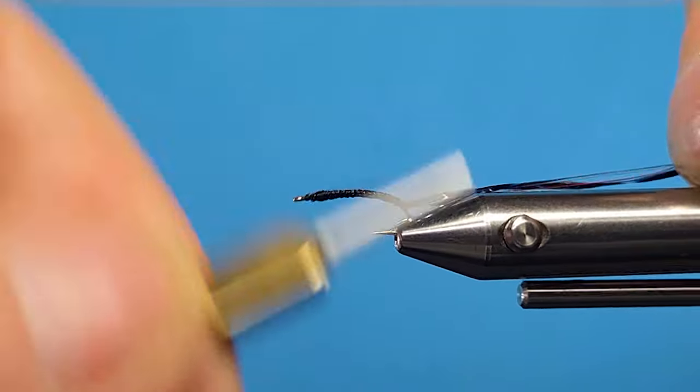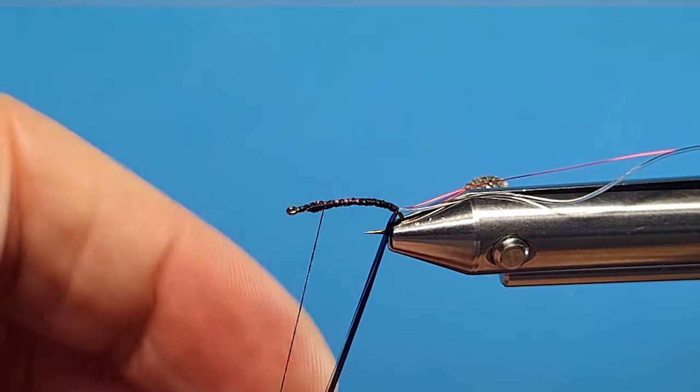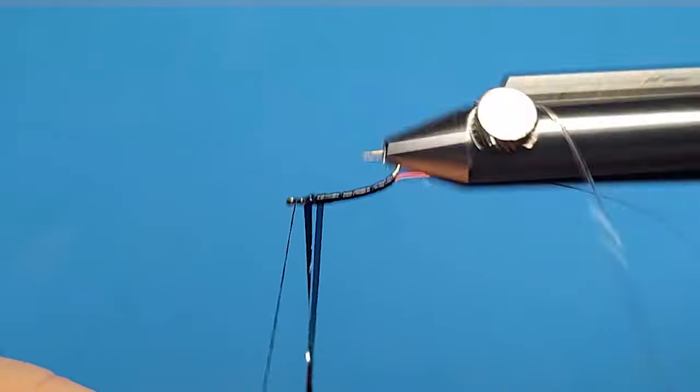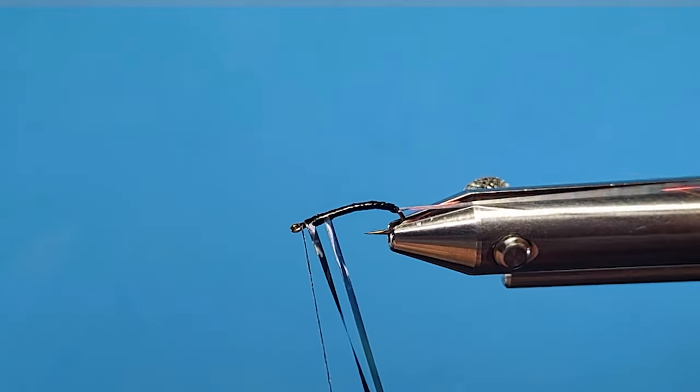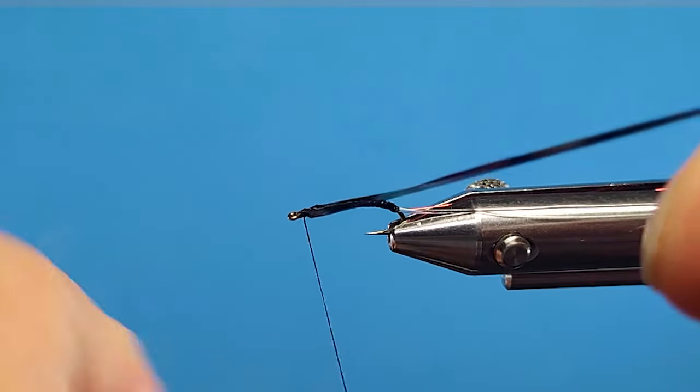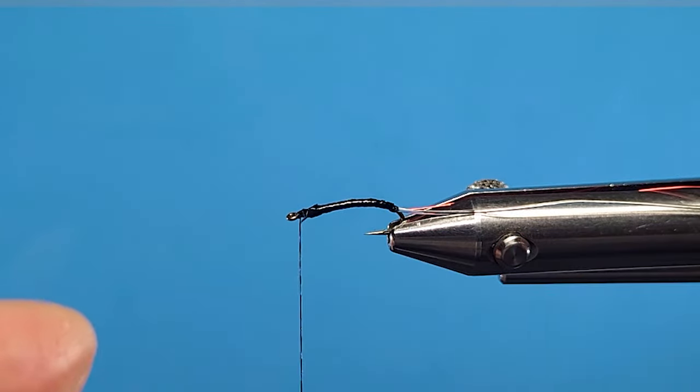I'll come right around the corner. Now I'll bring my buzzer wrap in, just wrap that forward and tie it off. There we go.